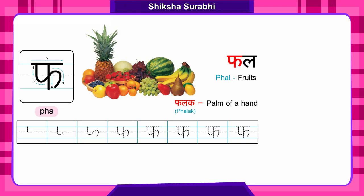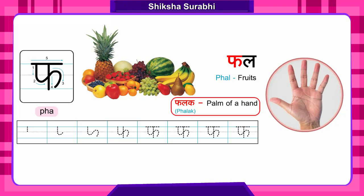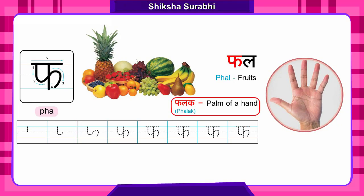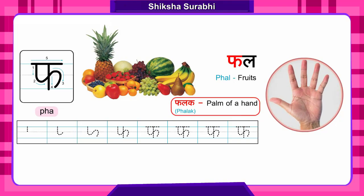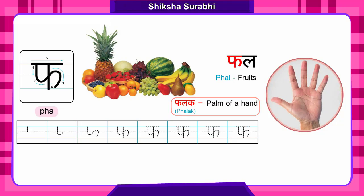The next word is Falak. Faa say Falak. Falak means palm of the hand. It is the front side of the hand. It's called palm of the hand. Faa say Falak.